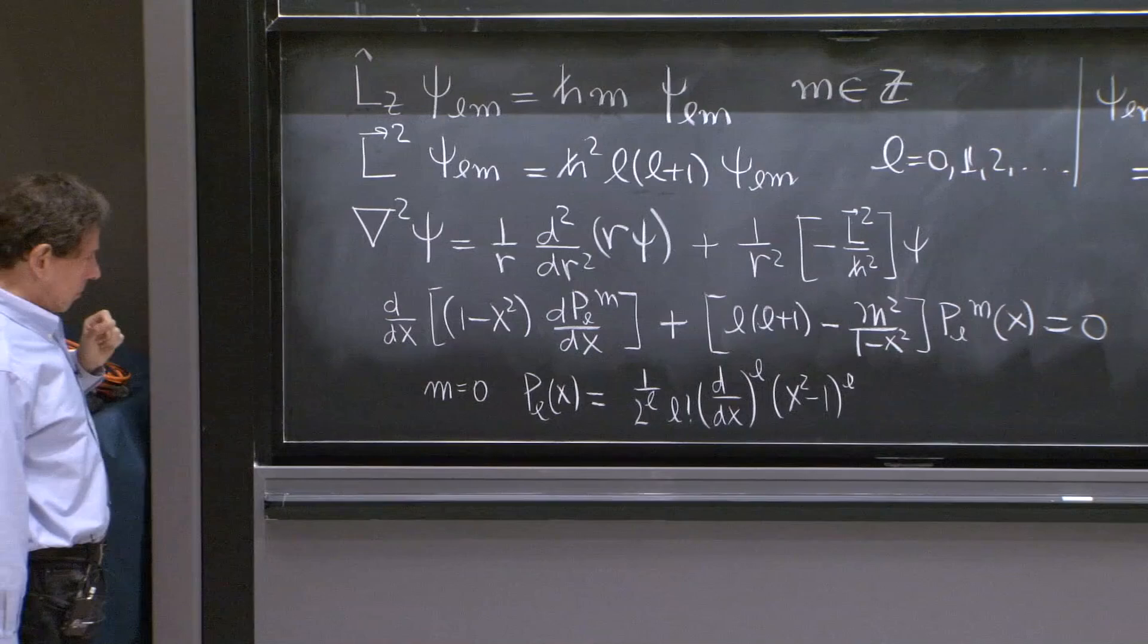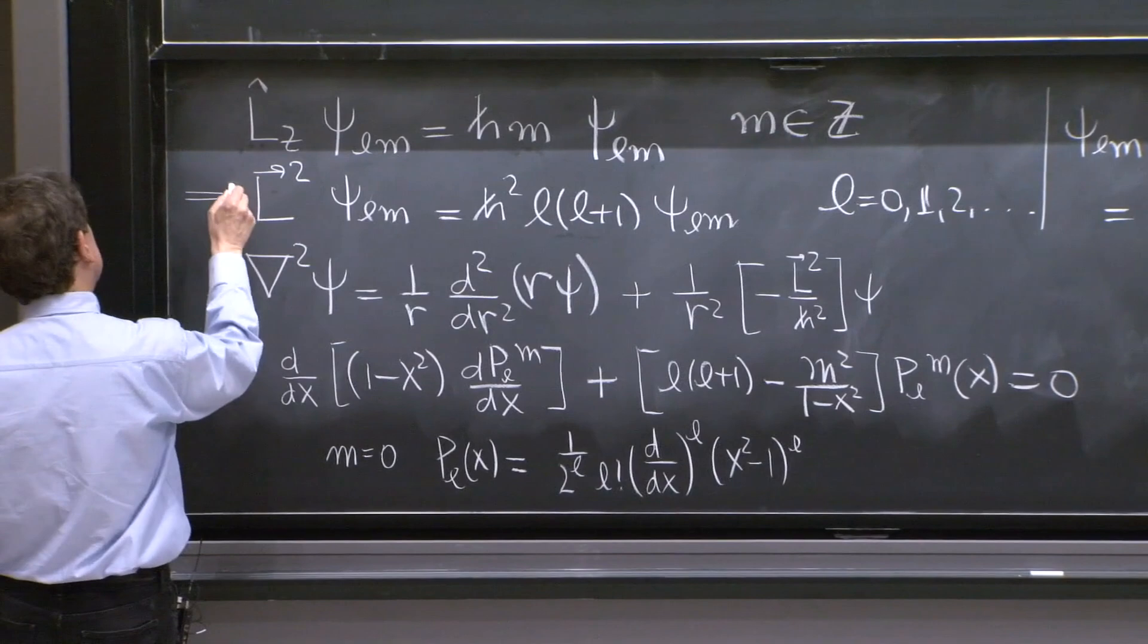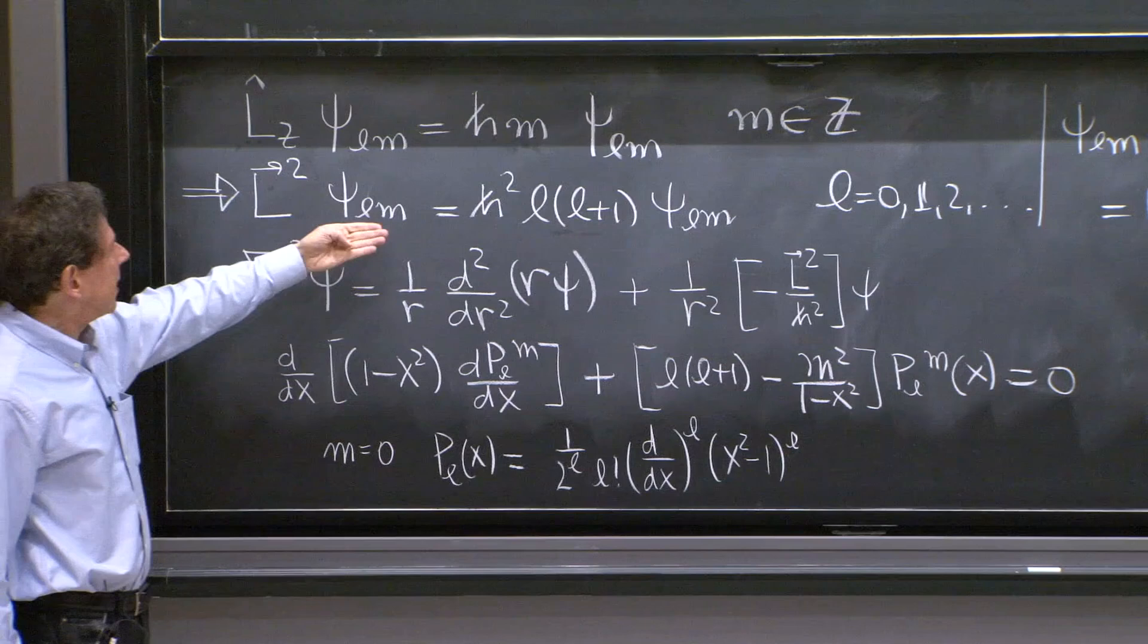And this, happily, we have this operator. That is an operator we can diagonalize, or we can find eigenstates for it.